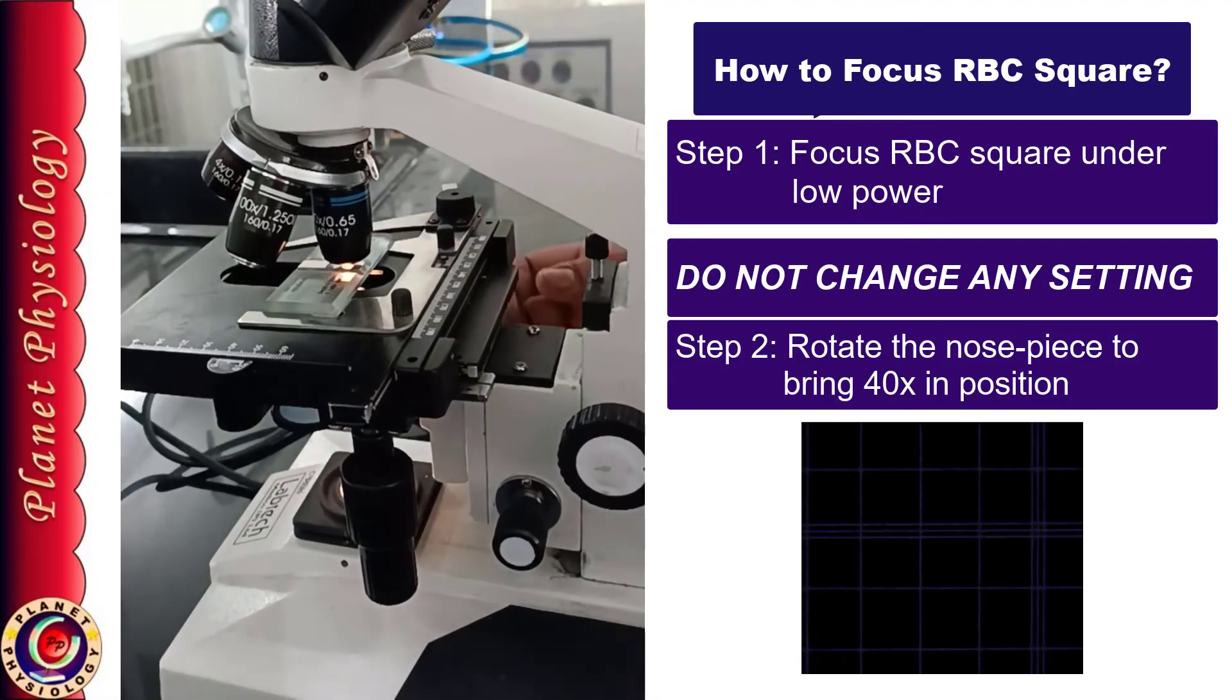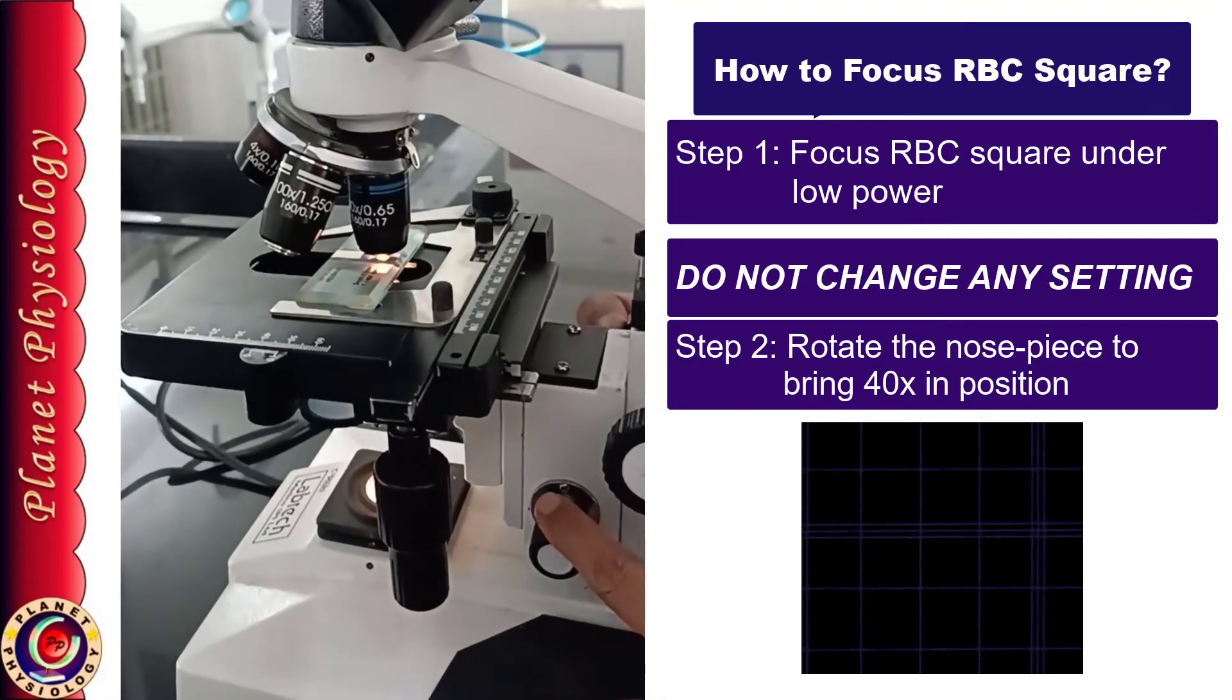So rotate the nose piece slowly while looking from sides and if your microscope has original objectives then high power objective will not touch your coverslip on the chamber.